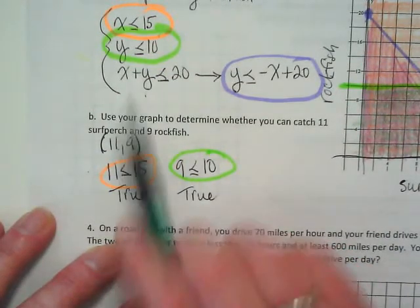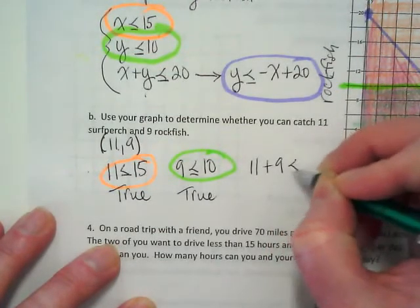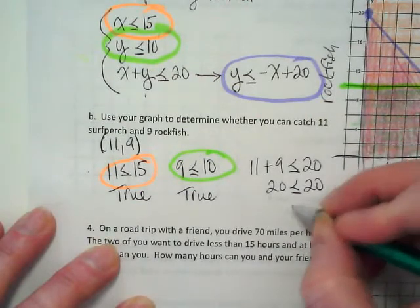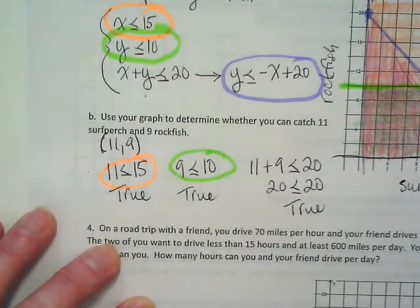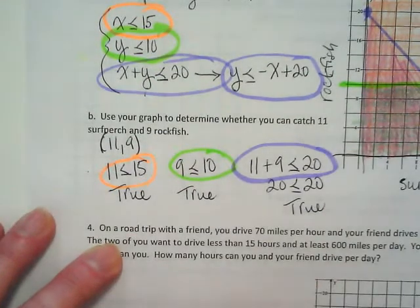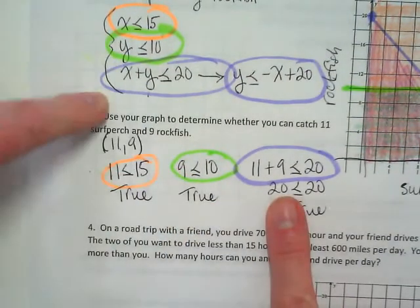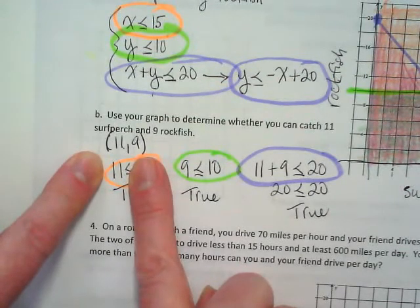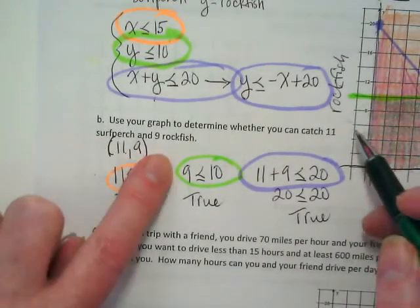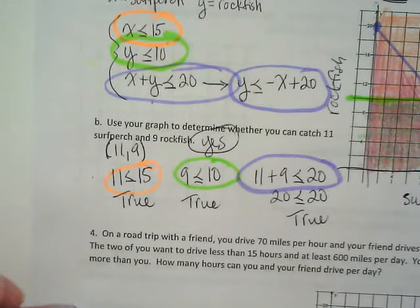And then our final inequality, we're going to plug these numbers in and see if it works. I have 11 plus 9 is less than or equal to 20, and I get 20 is less than or equal to 20. Is that also true? Yes. So we found by using our three inequalities and entering the xy pair, and we found by looking at our graph that it is possible to catch 11 surfperch and 9 rockfish and max out getting 20 fish with this permit.